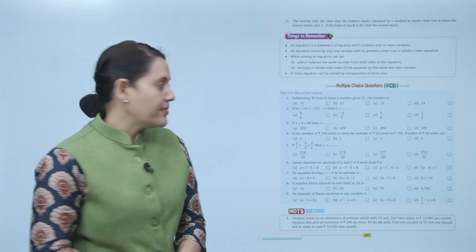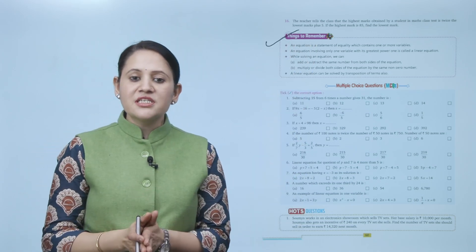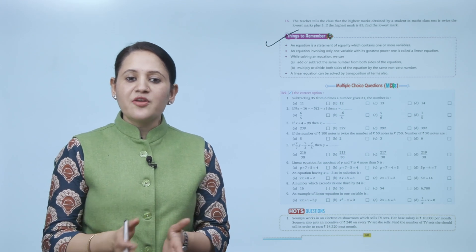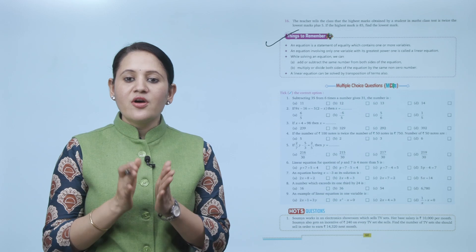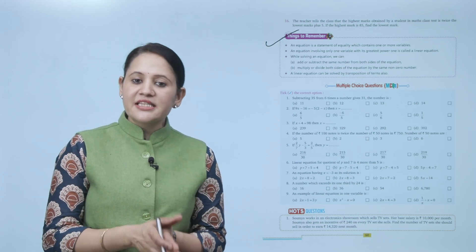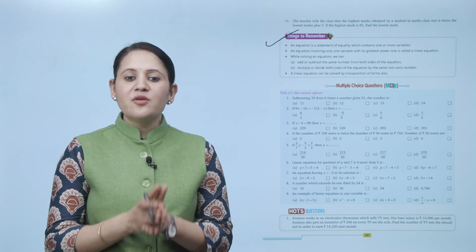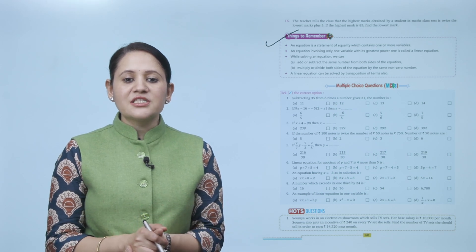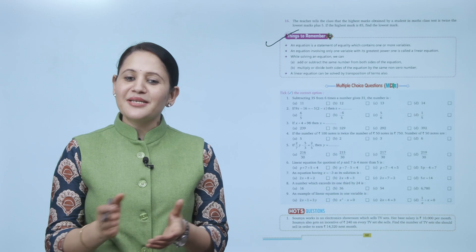Thanks to remember: an equation is a statement of equality which contains one or more variables. An equation involving only one variable with the greatest power one is called a linear equation. While solving an equation, we can add or subtract the same number from both sides, or multiply or divide both sides by the same non-zero number. A linear equation can also be solved by transposing terms.